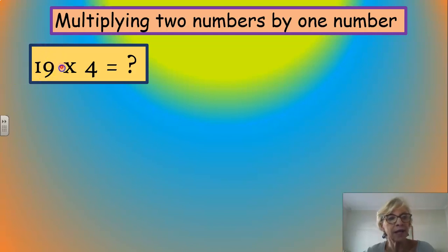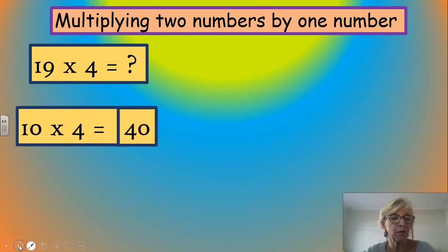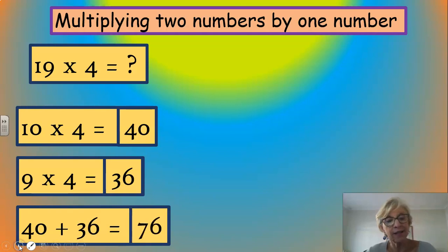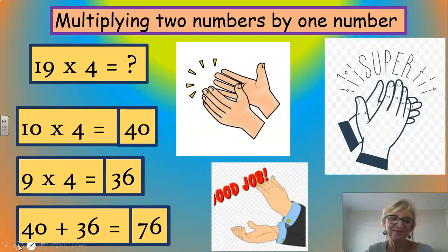And the answer is 39. Now let's show 19 times 4. I'm going to split 19 into 10 and 9. 10 times 4 is 40. 9 times 4 is 36. 40 plus 36 is 76. There we go. We have now multiplied, splitting our 19 into two numbers and multiplying 10 times 4 is 40. 9 times 4 is 36. And then we add the two numbers up together.